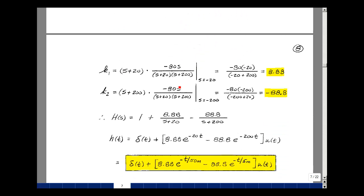To find k1, we multiply our proper rational function by s plus 20 and let s equal minus 20. We get minus 80 times minus 20 over minus 20 plus 200, which is 8.88. To find k2, we multiply by s plus 200 and let s equal minus 200. I get minus 80 times minus 200 over minus 200 plus 20, which equals minus 88.8. We'll write h(s) as 1 plus 8.88 divided by s plus 20 minus 88.8 divided by s plus 200.